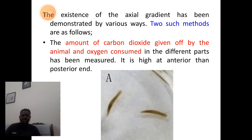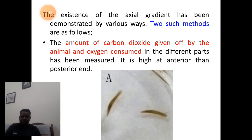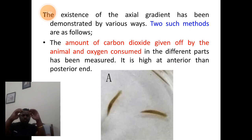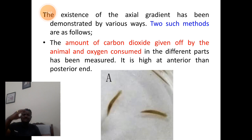The axial gradient regeneration power is demonstrated by two popularly known methods. Number one: the amount of carbon dioxide given off by the organism at different parts of the anteroposterior axis is measured, and simultaneously oxygen consumed by the same parts is observed. The result is that carbon dioxide release and oxygen consumption are both highest at the anterior-most head part, indicating that metabolic activity is highest at the head region.